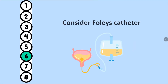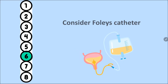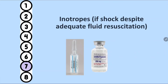A urinary catheter should be considered. If the patient does not agree, a condom catheter or diaper can be used — this prevents excessive trips to the toilet and also allows monitoring of urine output.